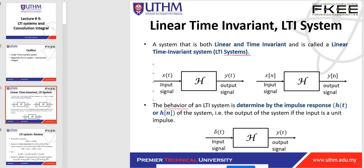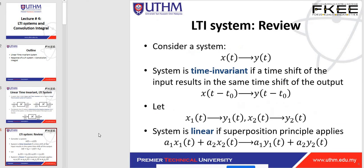The behavior of the LTI system is determined by the impulse response h(t) or h[n]. In this topic we only talk about h(t), the continuous time case. The output of the system when the input is a unit impulse is called the impulse response. In the LTI system, h(t) is determined by setting the input x(t) equal to delta(t) — the impulse. So we name h(t) the impulse response.